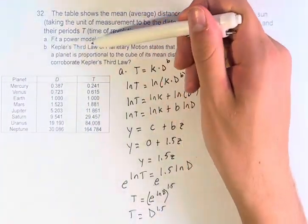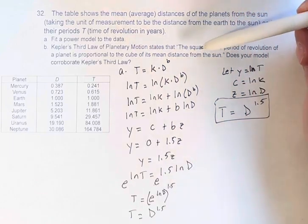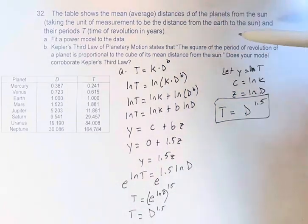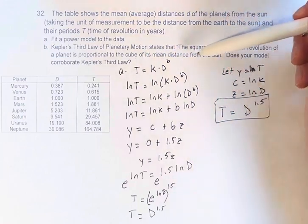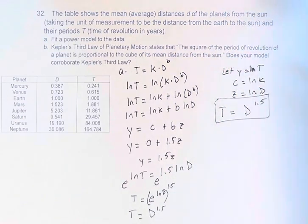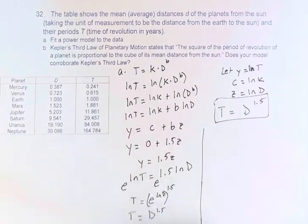In part b, we're told Kepler's third law of planetary motion states that the square of the period of revolution of a planet is proportional to the cube of its mean distance from the sun. Does your model corroborate Kepler's law? It does. If we do a little thing for b here.